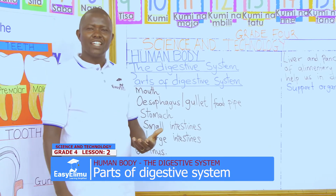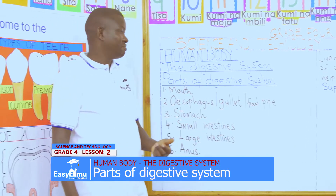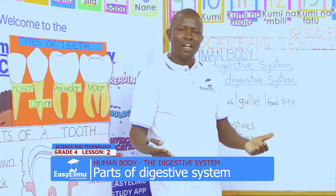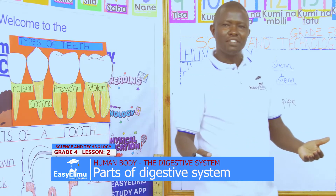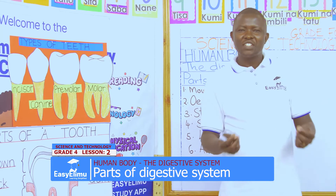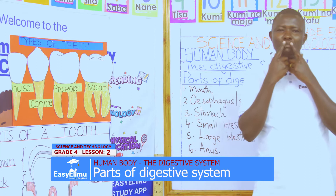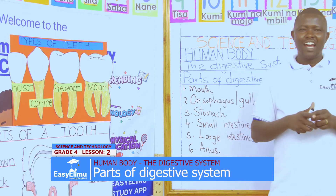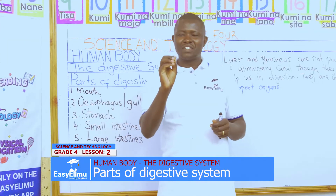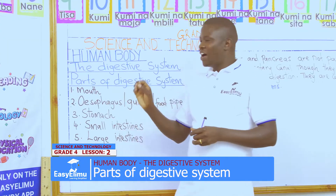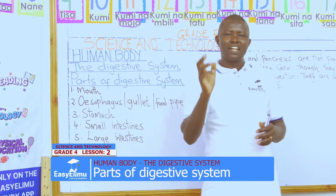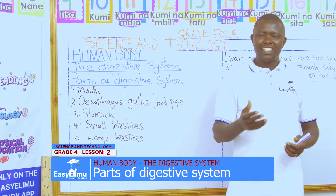Yesterday we looked at the digestive system, and we said digestion starts from the mouth. We looked at the mouth in detail and we said the mouth has teeth. Who else can remind us what is found in the mouth?